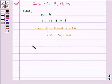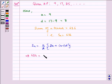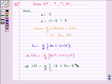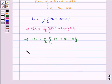We know SN is equal to N by 2 multiplied by 2A plus N minus 1 times d. Now substituting the values, which implies 636 is equal to N by 2 multiplied by 2 times 9 plus N minus 1 times 8. Which implies 636 is equal to N by 2 multiplied by 18 plus 8N minus 8, which implies 636 is equal to N by 2 multiplied by 8N plus 10.